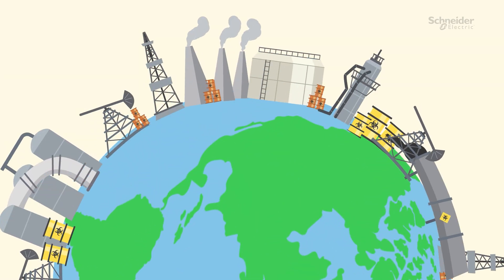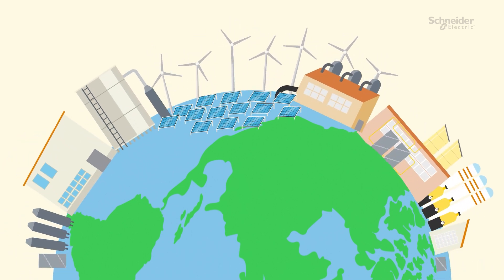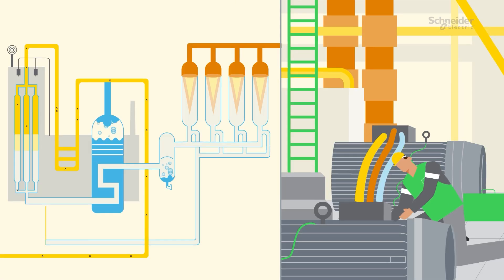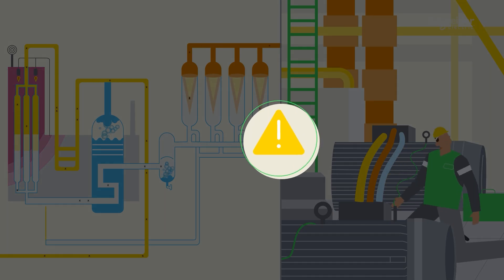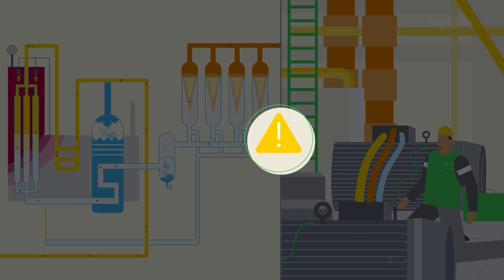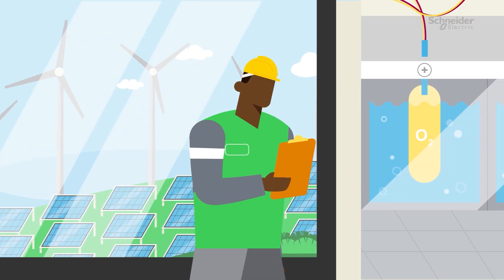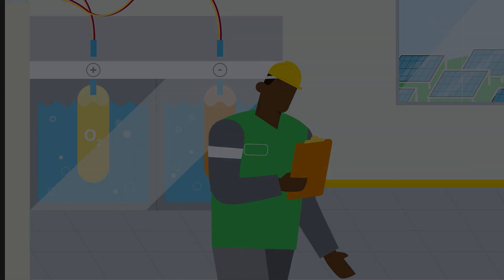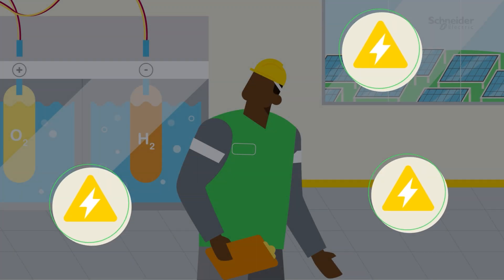Industries worldwide are undergoing a transformative energy shift from oil and gas to renewables and process electrification. It's important to remember that while making this transformation, design engineers need to identify the right size, power, and process requirements for improved capex and operations, and need to ensure that a stable power supply meets transient process requirements, thus improving opex and preventing downtime.